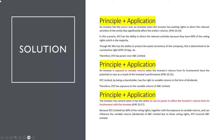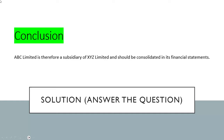Finally, the investor has control when it has the ability — that's the link — to use its power to affect the investor's returns from involvement with the investee. Because XYZ Limited has 60% of the voting rights, together with exposure to variable returns, and can influence the dividends of ABC Limited due to those voting rights, XYZ has the ability to use its power to affect the investee's returns.